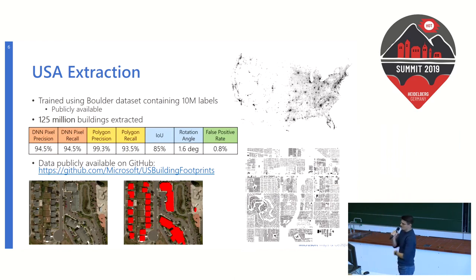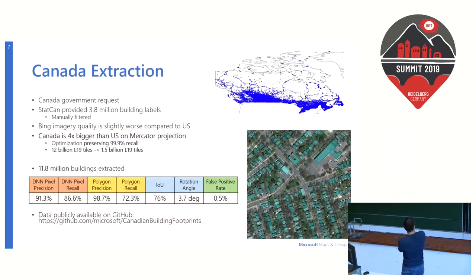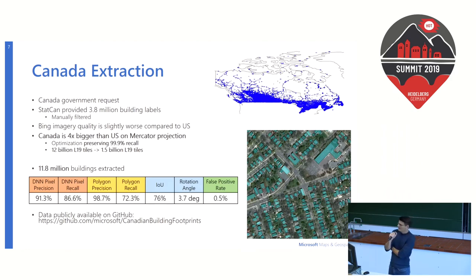In our case it was 10 million labels. We also shared with the community — half a year ago we published Canada buildings. The recall is a little bit lower compared to the USA, which can be mainly attributed to lower quality imagery or a higher proportion of buildings covered by low quality imagery.